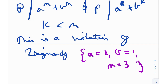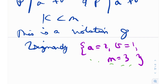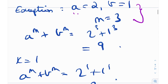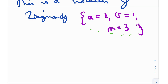The takeaway is: whenever you're applying Zsygmondy's theorem and it seems not applicable, there are two possible reasons. One is that you're in the exception case — easy to check by plugging in numbers. The other is that a is not greater than b. If p divides a^k + b^k for k less than m, one of these two cases must hold.